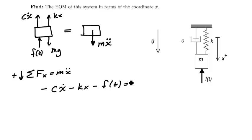I'm going to have minus c x dot minus kx minus f(t) plus mg is equal to m x double dot.